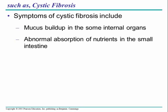Cystic fibrosis is an example of an autosomal recessive disease. It causes a mucus buildup in some internal organs including the lungs, making it difficult to breathe, and blocks and prevents nutrient absorption. It actually mutates a sodium pump in the lining of the lungs that prevents the removal or movement of sodium out of the lungs. Thus, the sodium attracts water and it builds up on the lining of the lung.